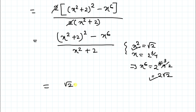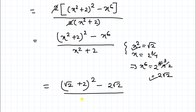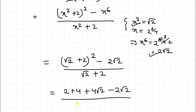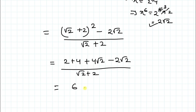Now substituting all values, we have: (√2 + 2)² − 2√2, all divided by (√2 + 2). Opening the bracket: (2 + 4 + 4√2 − 2√2) divided by (√2 + 2), which simplifies to (6 + 2√2) divided by (√2 + 2).